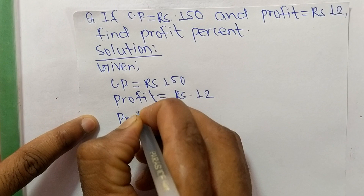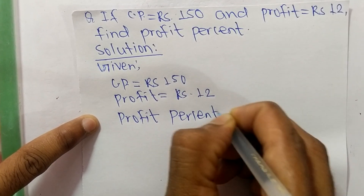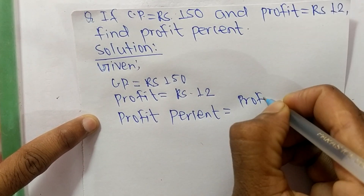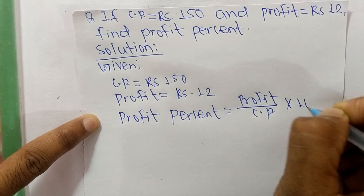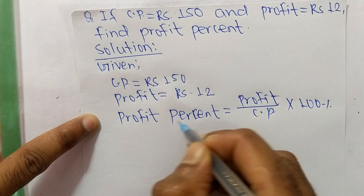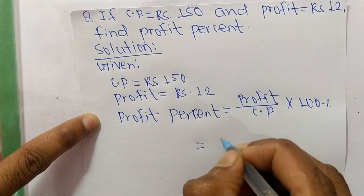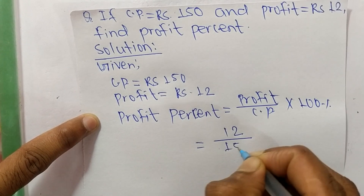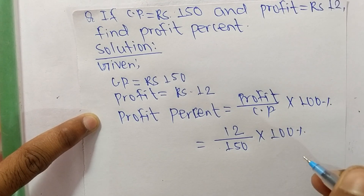The profit percent formula is: Profit divided by CP, into 100 percent. Using this formula, profit given is 12 and CP given is 150, so we get 12 divided by 150, into 100 percent.